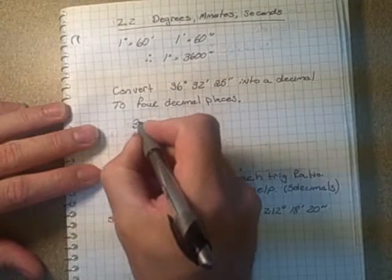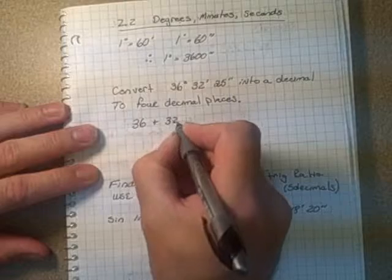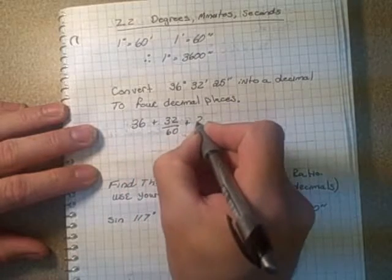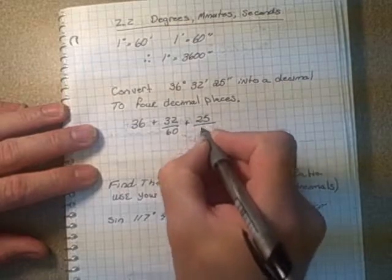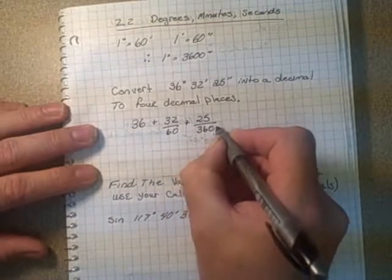That would be simple, that would just be 36 plus 32 minutes over 60, that would give us so many degrees, plus 25 seconds over 3600.